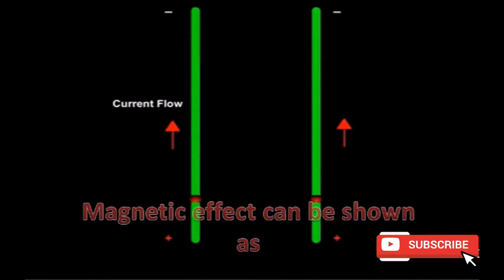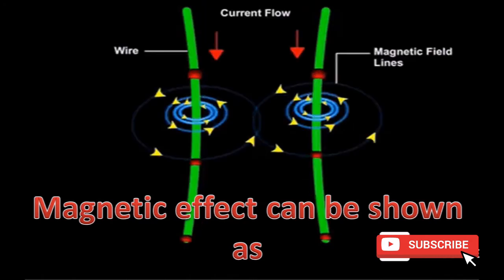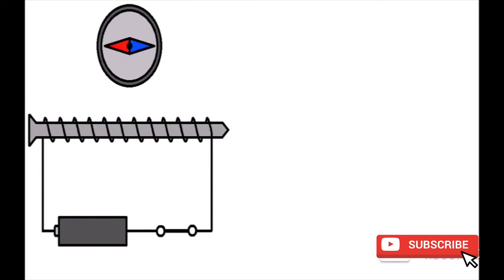When current flows through the conductor, the magnetic effect can be shown as a development of magnetic field around the conductor.